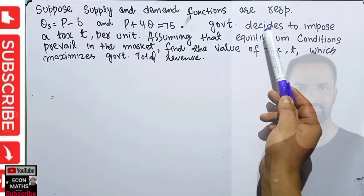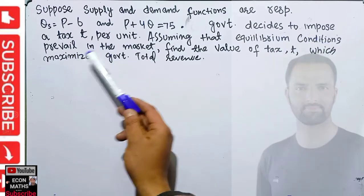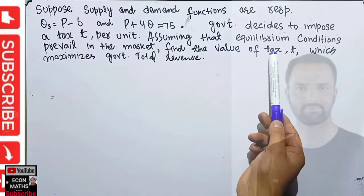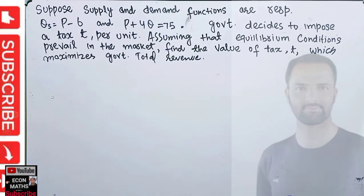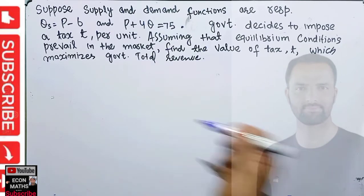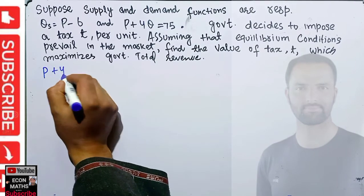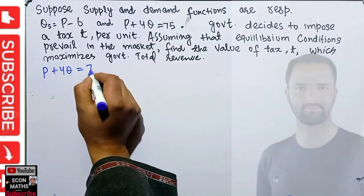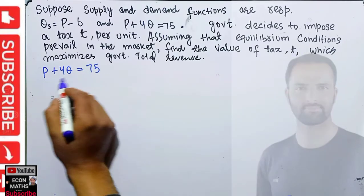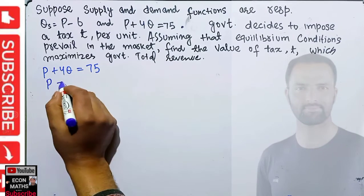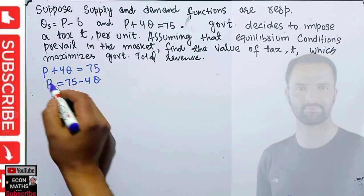The government decides to impose a tax T per unit. Assuming equilibrium conditions prevail in the market, find the value of tax T which maximizes the government's total revenue. Our demand function is P + 4Q = 75, and solving for P this becomes P = 75 - 4Q.